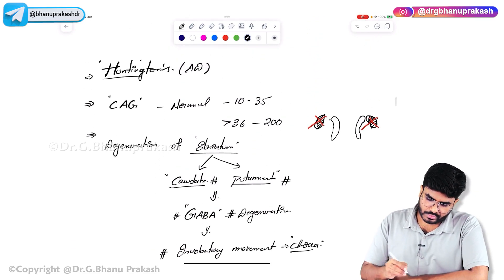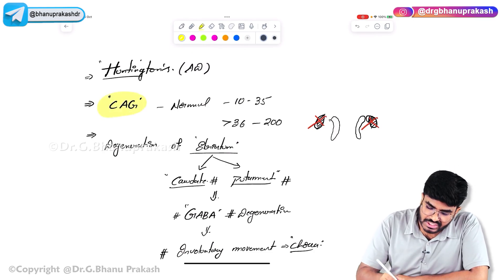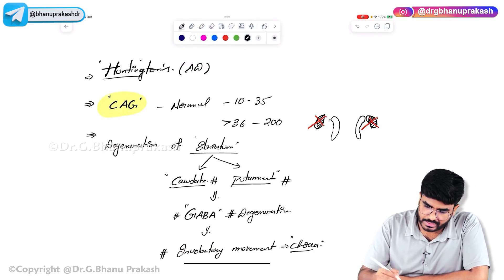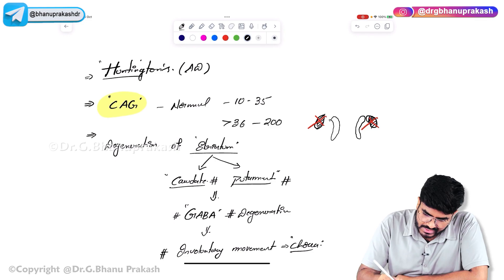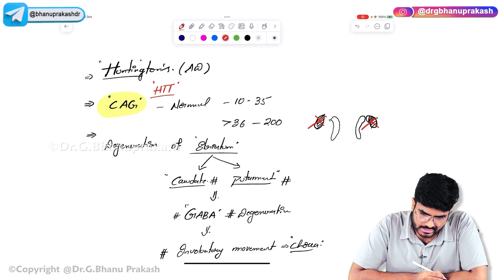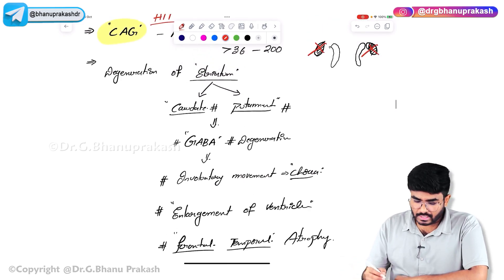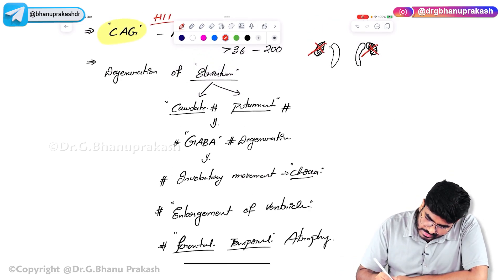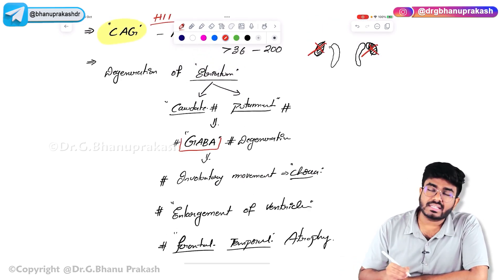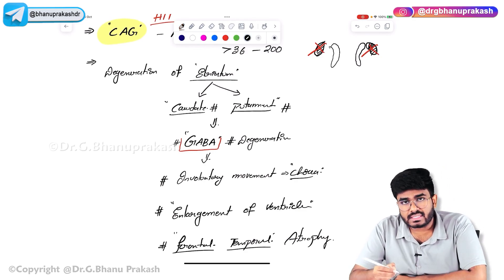The repeat type in Huntington's is CAG repeats. The gene mutation responsible is called the HTT gene mutation — the Huntington's gene mutation.